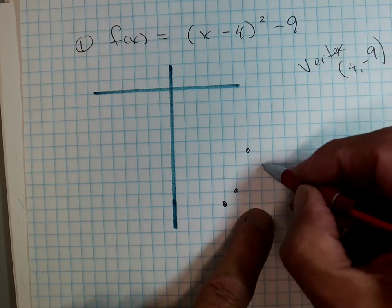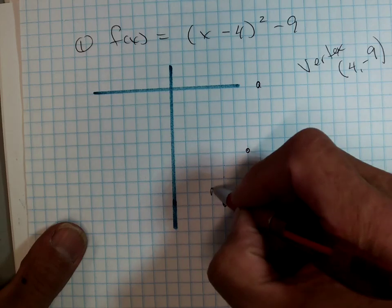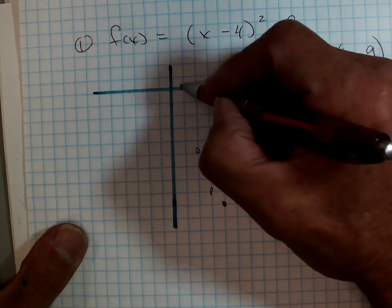And I go back to my vertex. If I go over 3, 3 squared is 1, 2, 3, 4, 5, 6, 7, 8, 9. And, of course, it's symmetrical. Okay? And there it is.